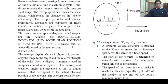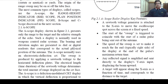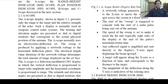Last time we saw the classification of radar displays. The most common type of display is called scopes: A-scope, Range Height Indicator RHI scope, Plan Position Indicator PPI scope, B-scope, and C-scope. First of all, the A-scope display.